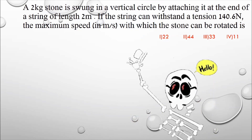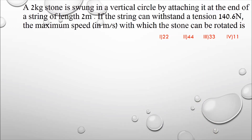Hello everyone, welcome to Example of Physics, where we study concepts by solving questions. This question was sent by one of my students and is on the topic of vertical circular motion. A 2 kg stone is swung in a vertical circle by attaching it to a string of length 2 meters. If the string can withstand a tension of 140.6 newtons, then the maximum speed in meters per second with which the stone can be rotated is — options are 22, 44, 33, and 11.